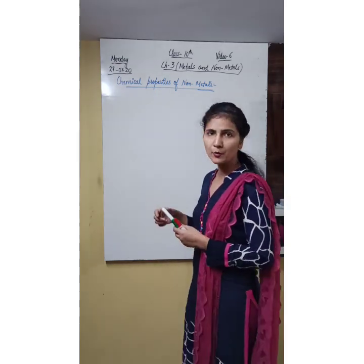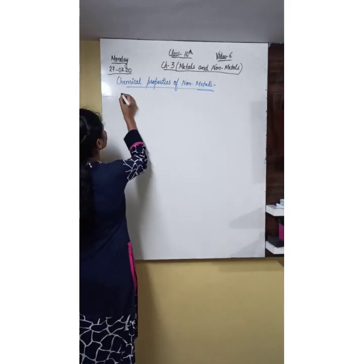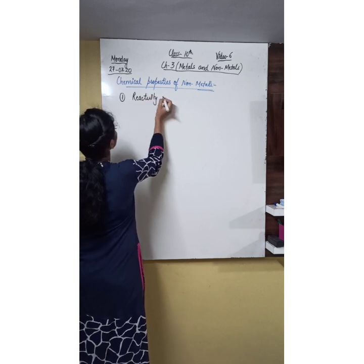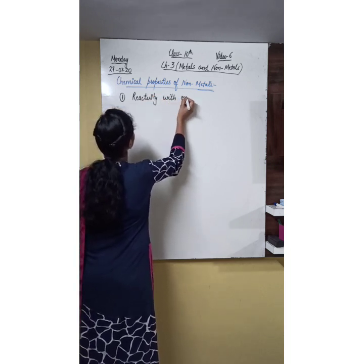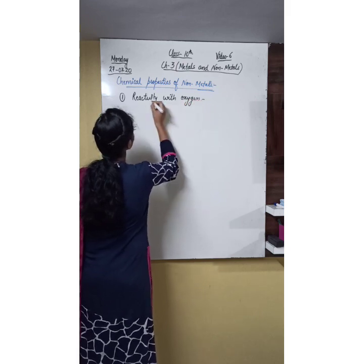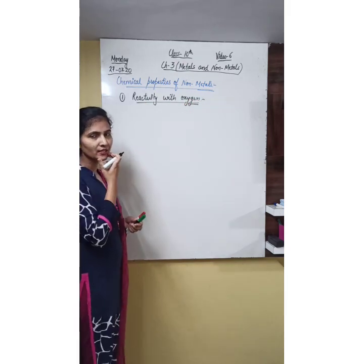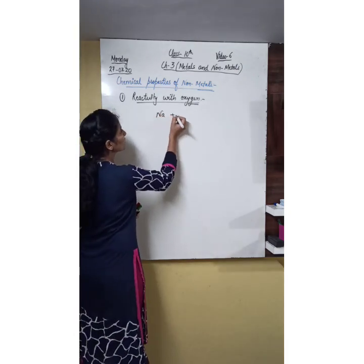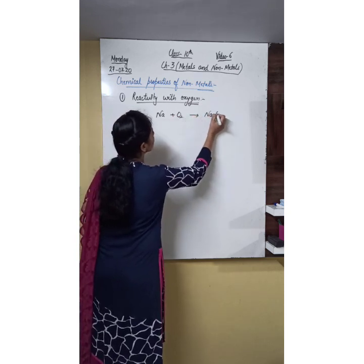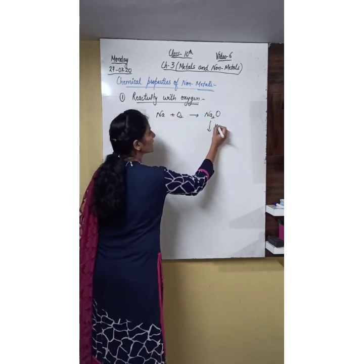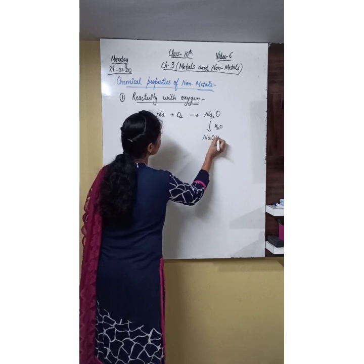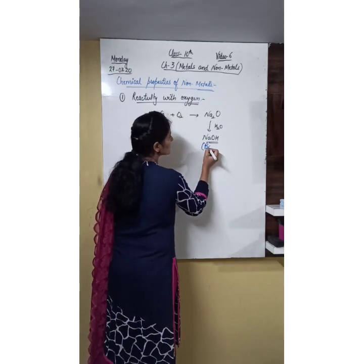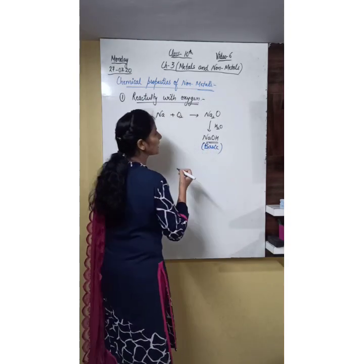The first chemical property of non-metals is reactivity with oxygen. We already discussed that when metals react with oxygen, they form metal oxides. For example, sodium reacts with oxygen to form sodium oxide, which dissolves in water to form sodium hydroxide — which is basic in nature, meaning it turns red litmus to blue.